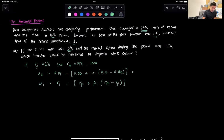And if we solve this one, that's going to be 0.19 minus 0.18, which is going to be equal to 0.01, or 1%. That's for advisor 1.